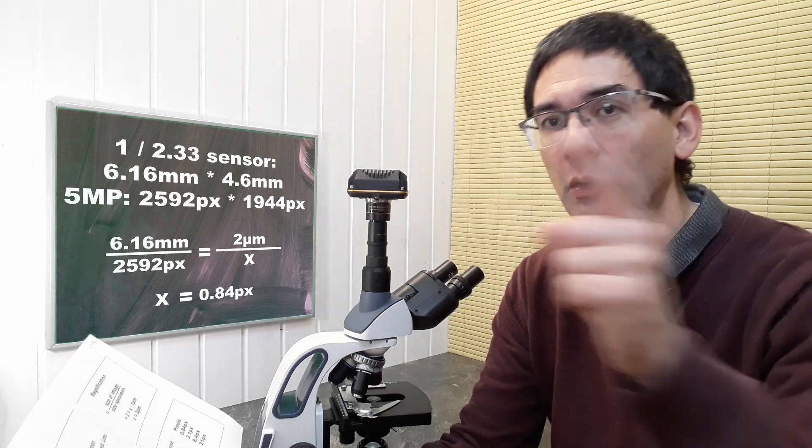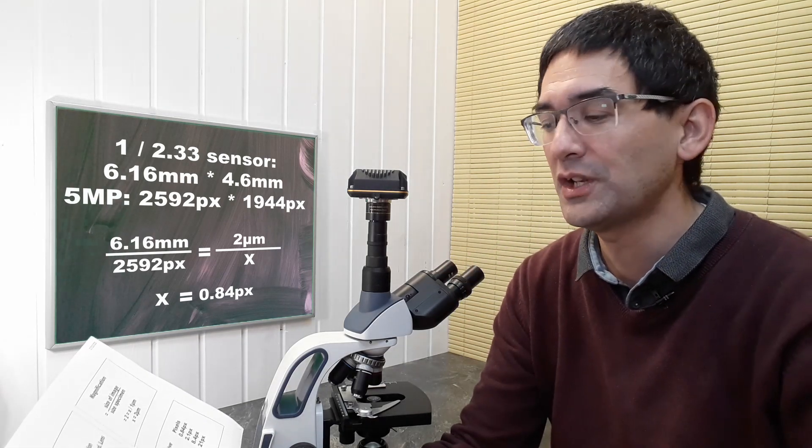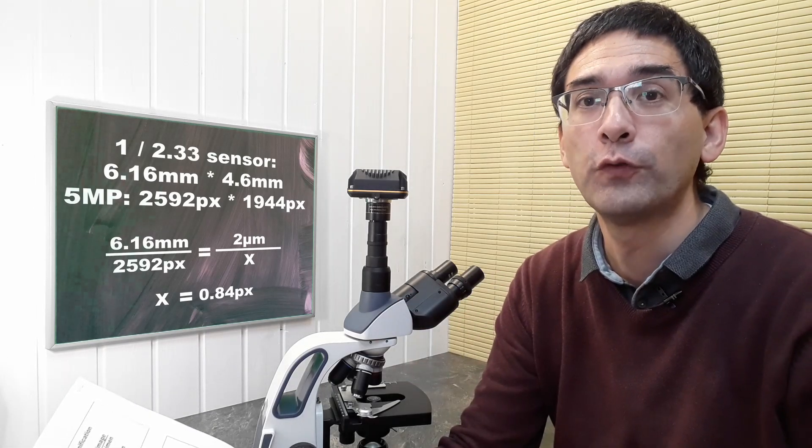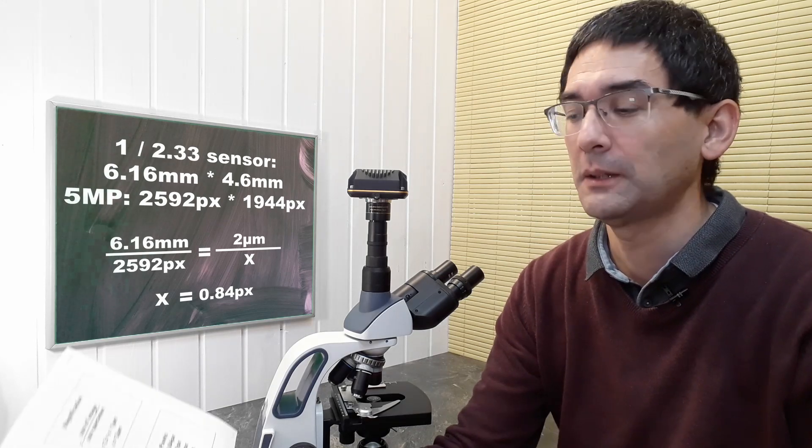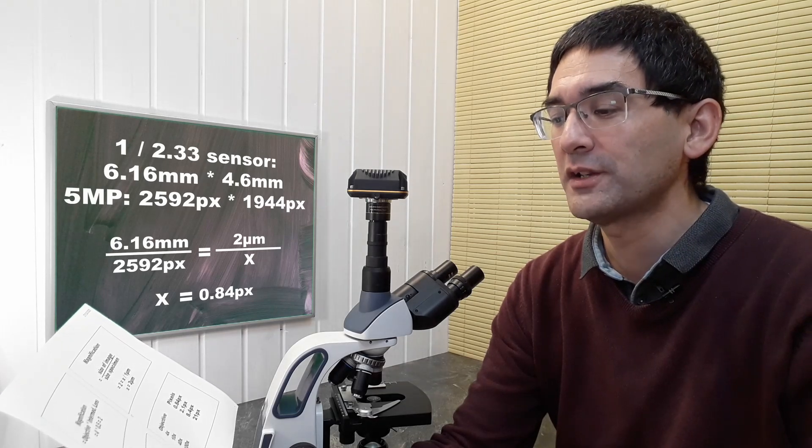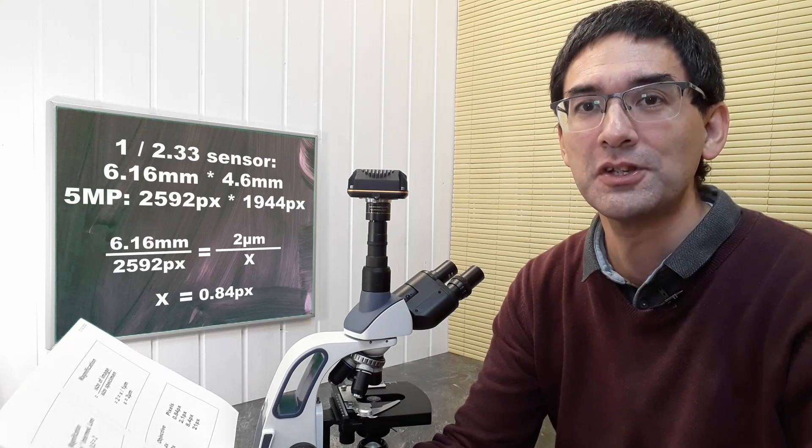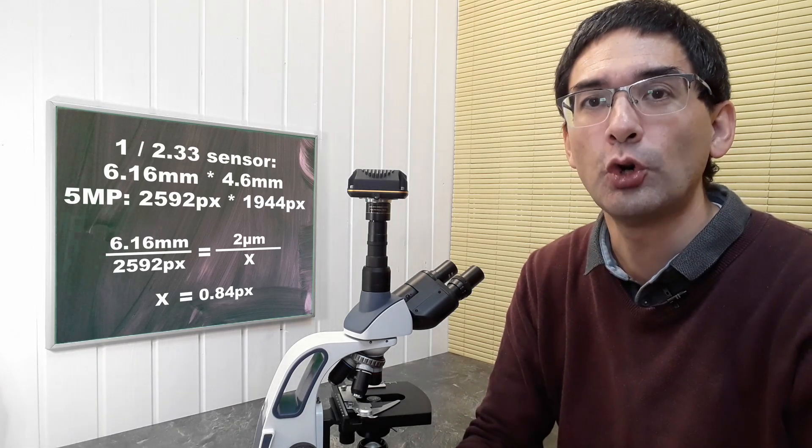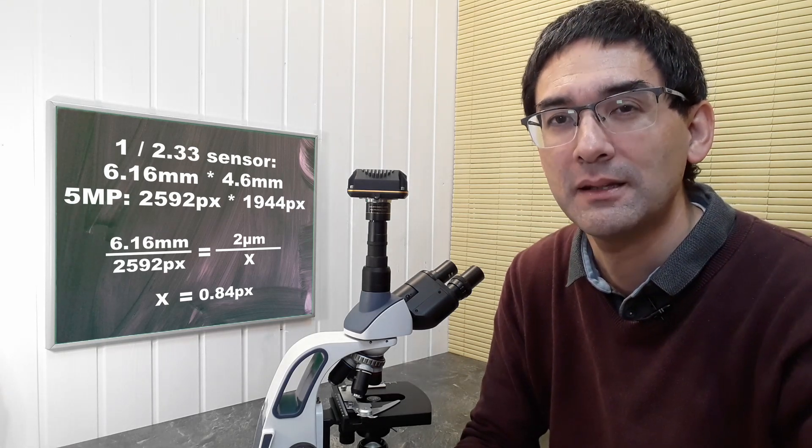I'm taking the horizontal width, the number of pixels across, and plugging it into the direct proportion formula. I solve for x by cross multiplying: 2 micrometers times 2,592 pixels divided by 6.16 millimeters. The number of pixels that this object requires is 0.84 pixels - less than a pixel.